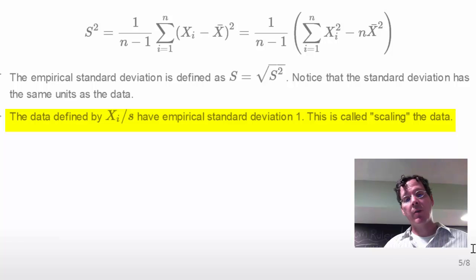Another interesting fact, kind of related to centering, is scaling. So if we subtract the mean off from every observation, we get a resulting data set that has mean zero. If we divide every observation by the standard deviation, the resulting data set will have standard deviation 1. This is called scaling the data.